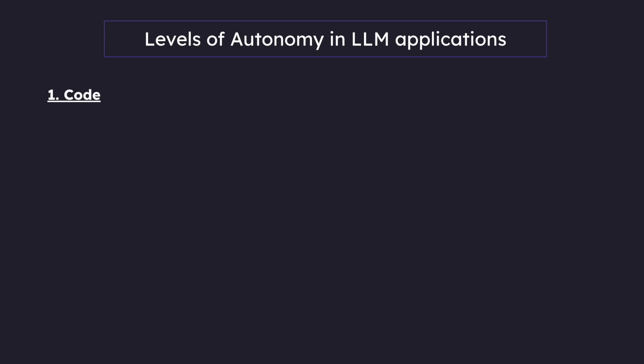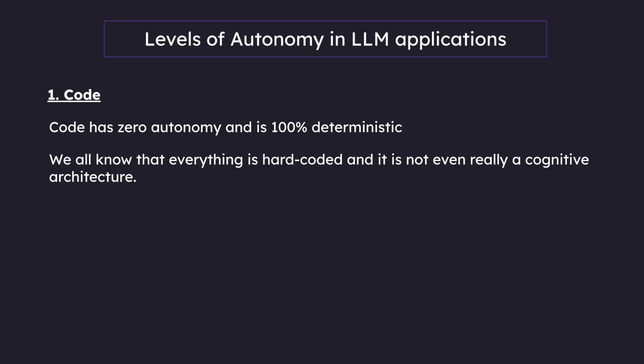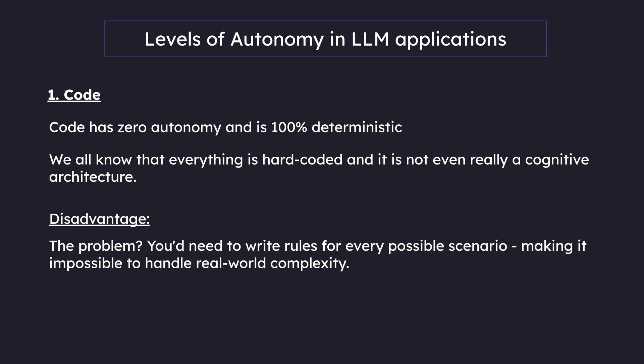The first level is code. Code has zero autonomy and is 100% deterministic. Everything is hard-coded and it is not even really a cognitive architecture. The disadvantage is that you would need to write rules for every possible scenario, making it impossible to handle real-life complexity.